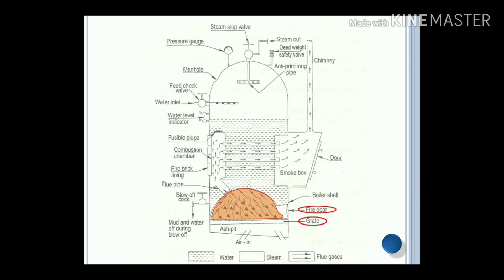Fire door: for introducing continuous fuel to generate combustion into the boiler. Ash pit: to collect the unburned coal or unburned fuel, which will be converted into ash, and it will be drained with the help of the ash pit.